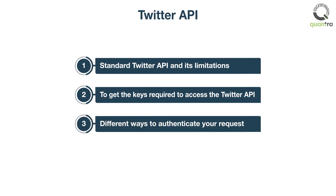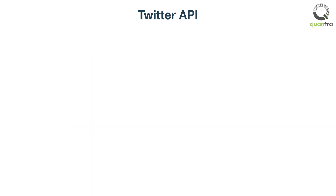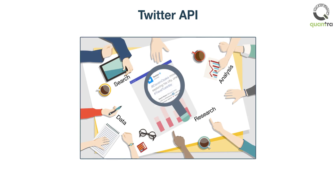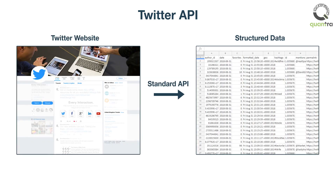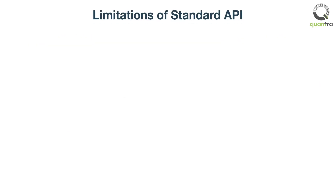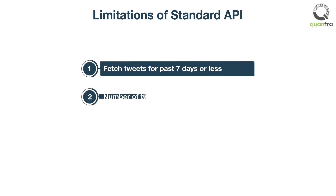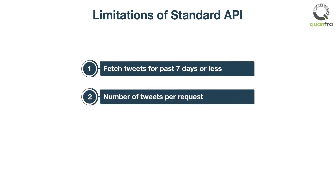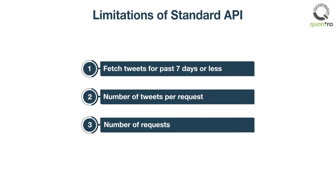Different ways to authenticate your request will also be covered. Twitter provides data for research or analytical purposes through the Twitter API. The standard API is the free version of the Twitter API which can be used to access tweets data. It has limitations such as you can only fetch tweets from the past 7 days or less, the number of tweets per request are limited, and the number of requests are limited which resets after 15 minutes. These limitations help Twitter to keep the usage under control and avoid congestion.